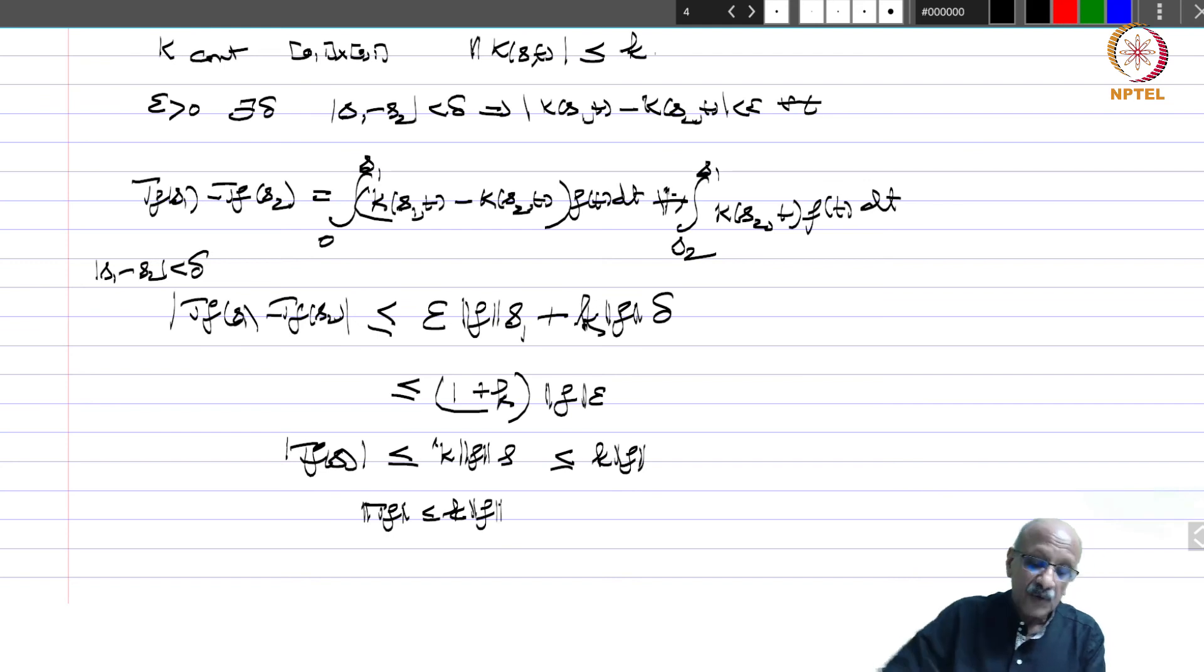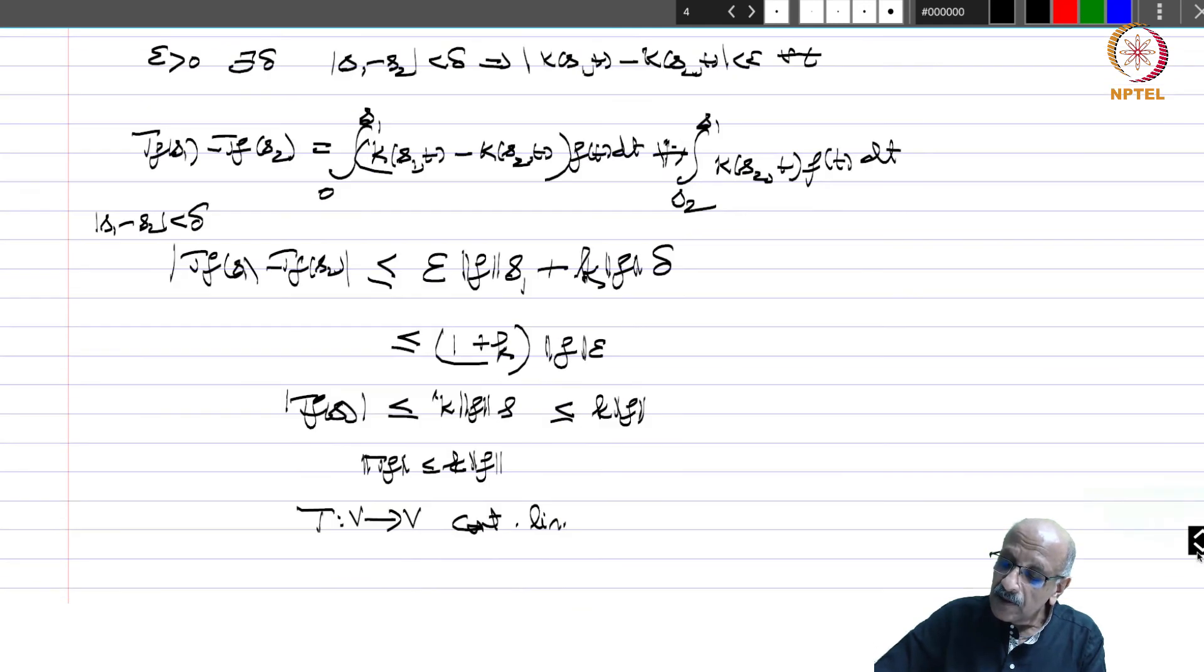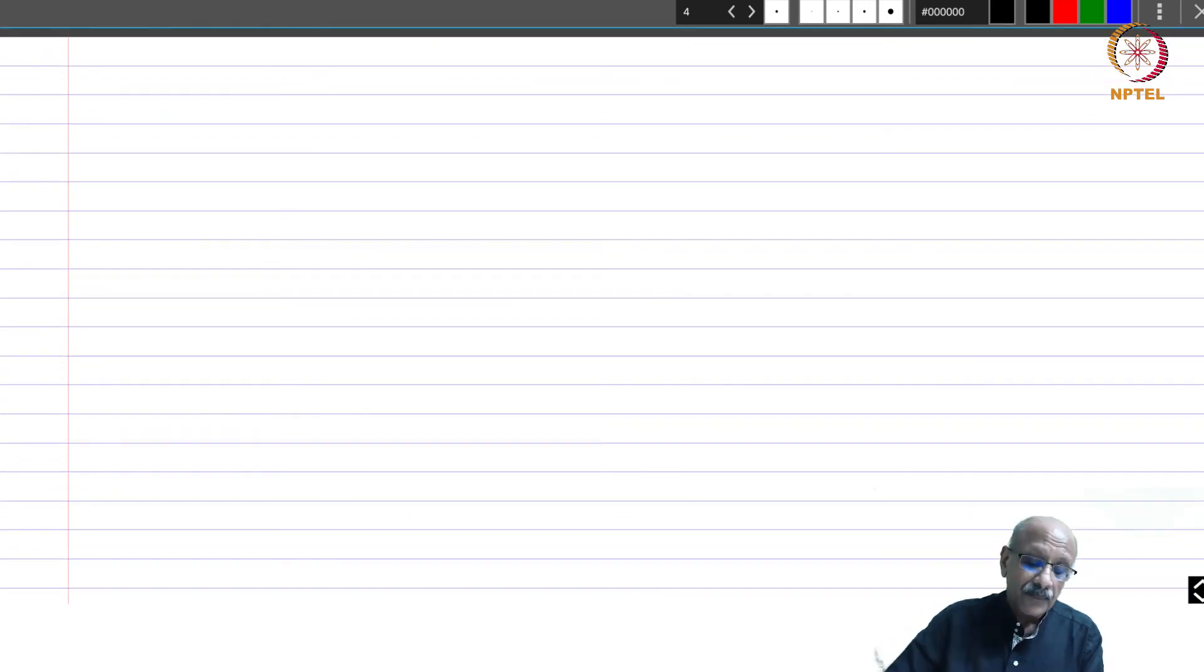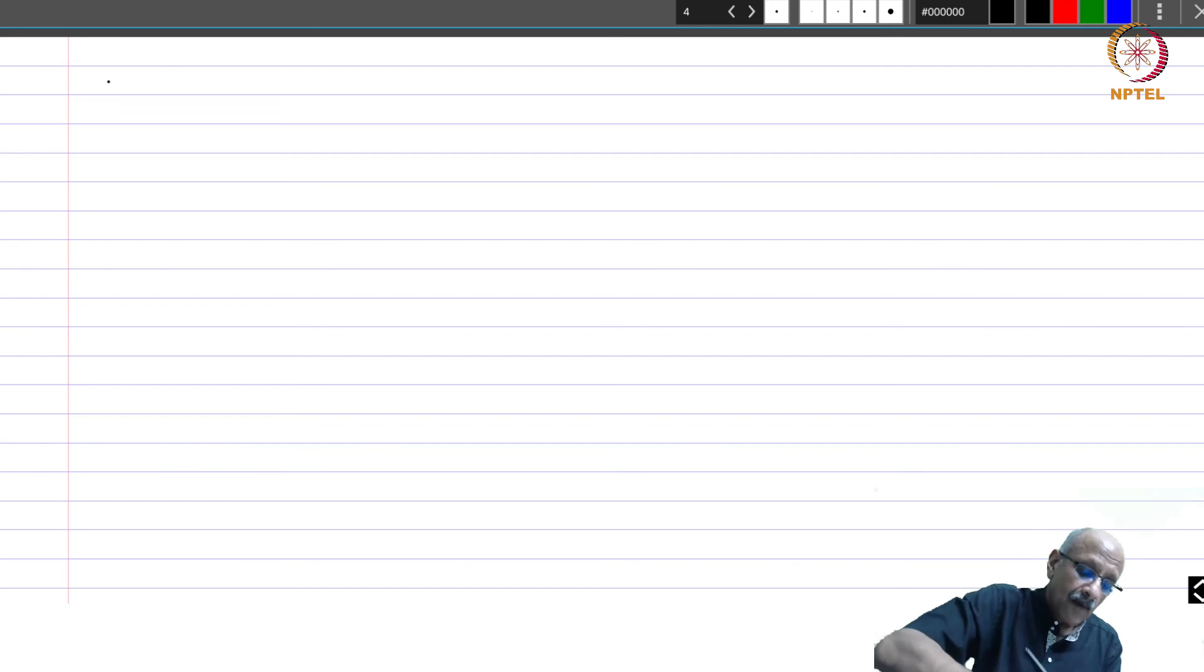Therefore, this tells you that this operator or mapping which we define t from v to v is continuous and linear. We have seen some examples of mappings which are continuous linear mappings. Let me give you finally an example of a mapping which is not continuous but linear.